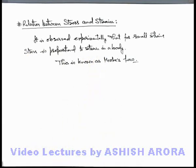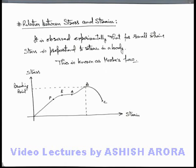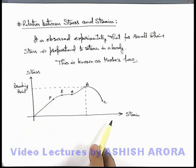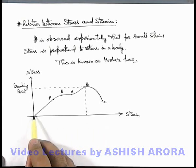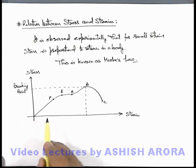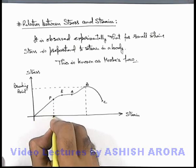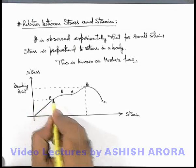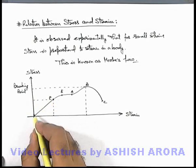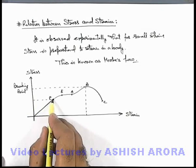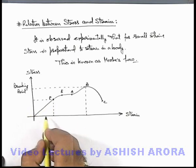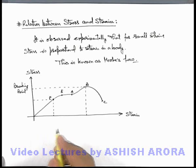Let's have a look at a graph showing how stress and strain are related in a given material. We can see that when strain is small and we apply some stress, strain will proportionately increase. Up to point P the graph is a straight line having constant slope, so up to this limit we can say stress is directly proportional to strain. This is what we call Hooke's Law.